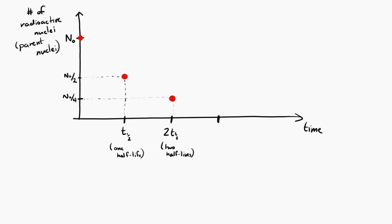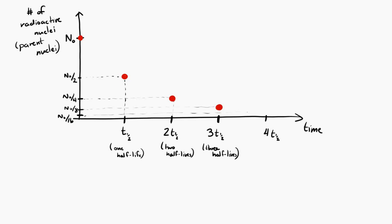If we wait one additional half-life, yet another half of the nuclei will decay, and we'll be left with one eighth of the original number. If we wait one more half-life, a further half decays and we're left with one sixteenth of the original number of nuclei. So as each half-life passes, half of the remaining nuclei decay.